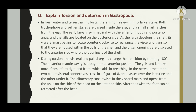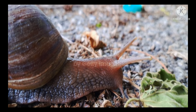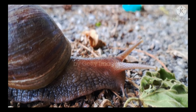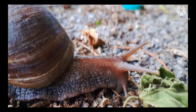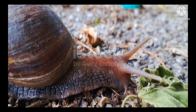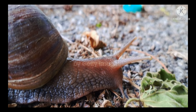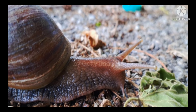In freshwater and terrestrial mollusks there is no free-swimming larval stage. Both the trochophore and veliger stages are passed inside the egg, and a small snail hatches from the egg. The early larva is symmetrical with the anterior mouth and posterior anus, and the gills are located on the posterior side.